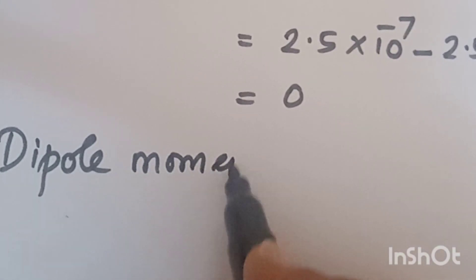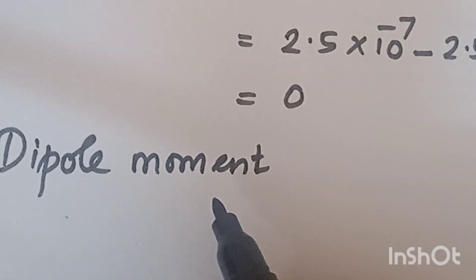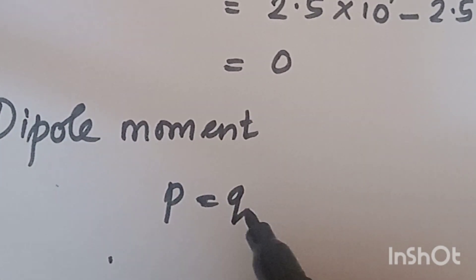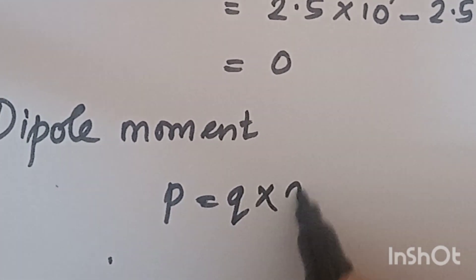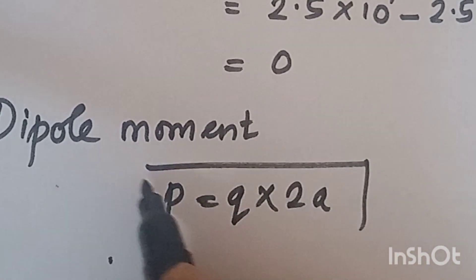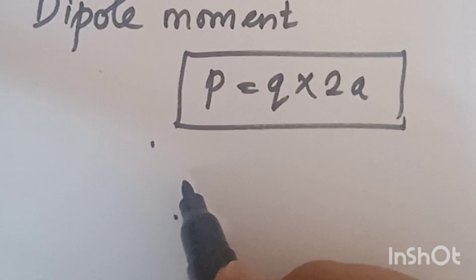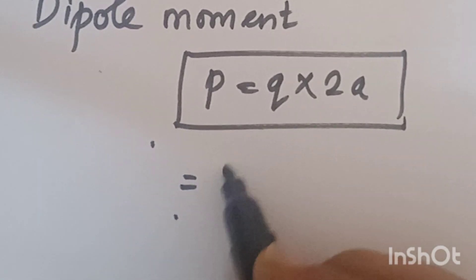Now for dipole moment. Dipole moment formula is P is equal to Q into 2A. Therefore, P is equal to Q, which is 2.5 into 10 power minus 7, into 2A.